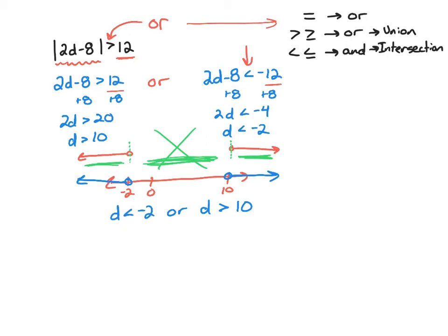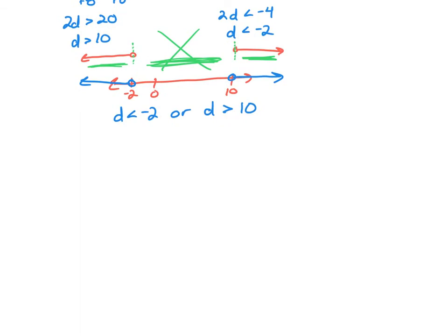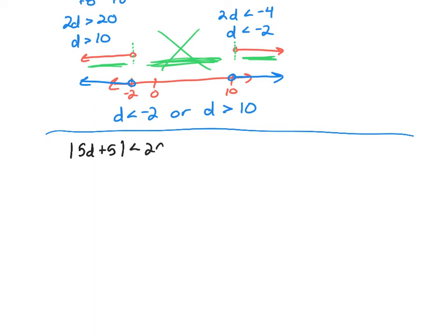That was an or statement — or is a union of two data sets. Now let's also look at an intersection. For this one, we have the absolute value of 5d plus 5 is less than 20.